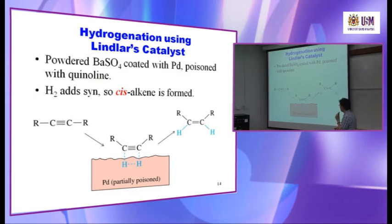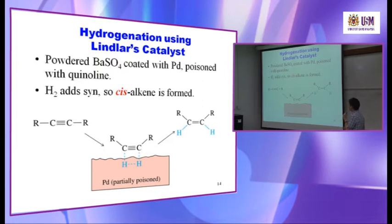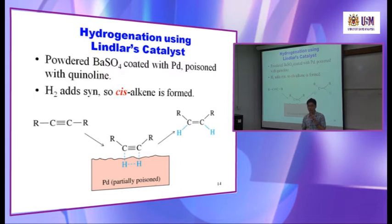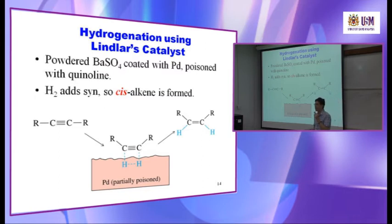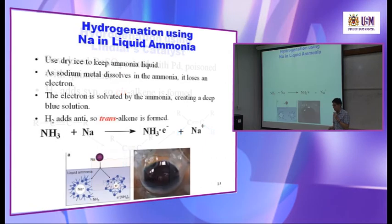What is significant about Lindlar catalyst? The addition produces only a cis-alkene because it is a syn addition. Most reactions we study are anti-addition, but this is syn addition — meaning both hydrogens are added from the same side. The alkyne interacts with the palladium surface, and H2 is donated from that same side. The breaking of the pi bond and forming of two C–H bonds occurs from the same face, so a cis-alkene forms.